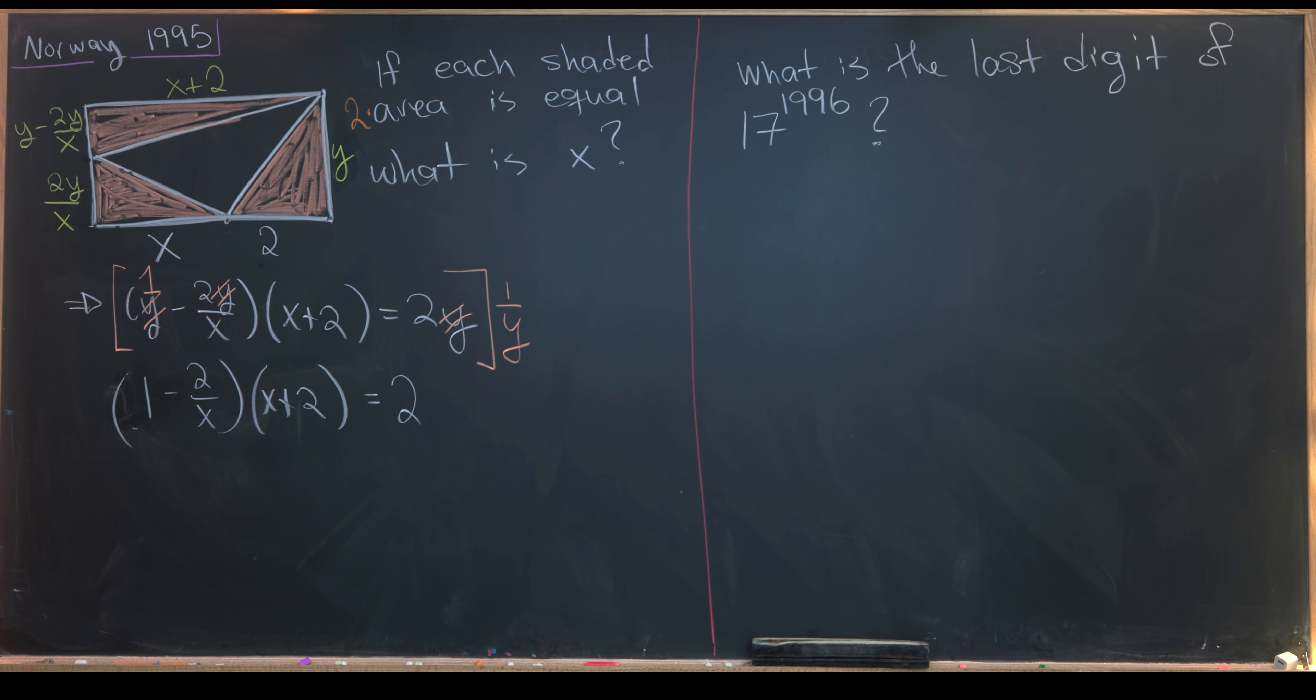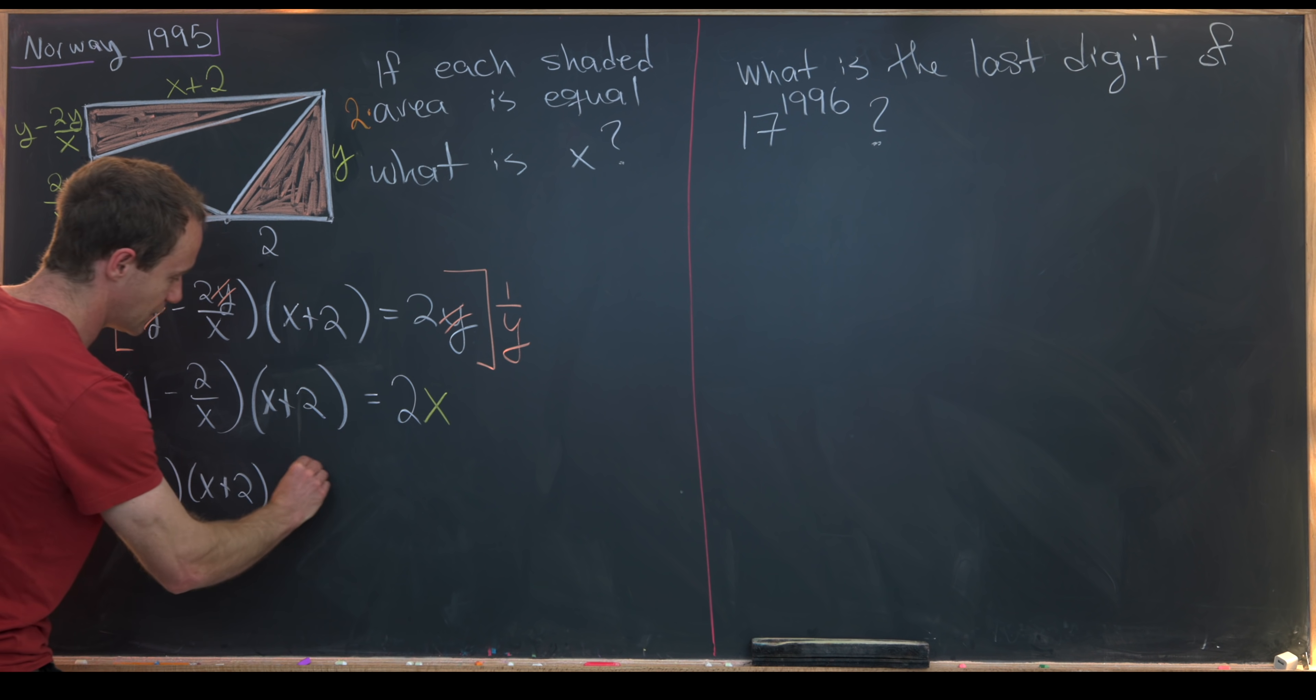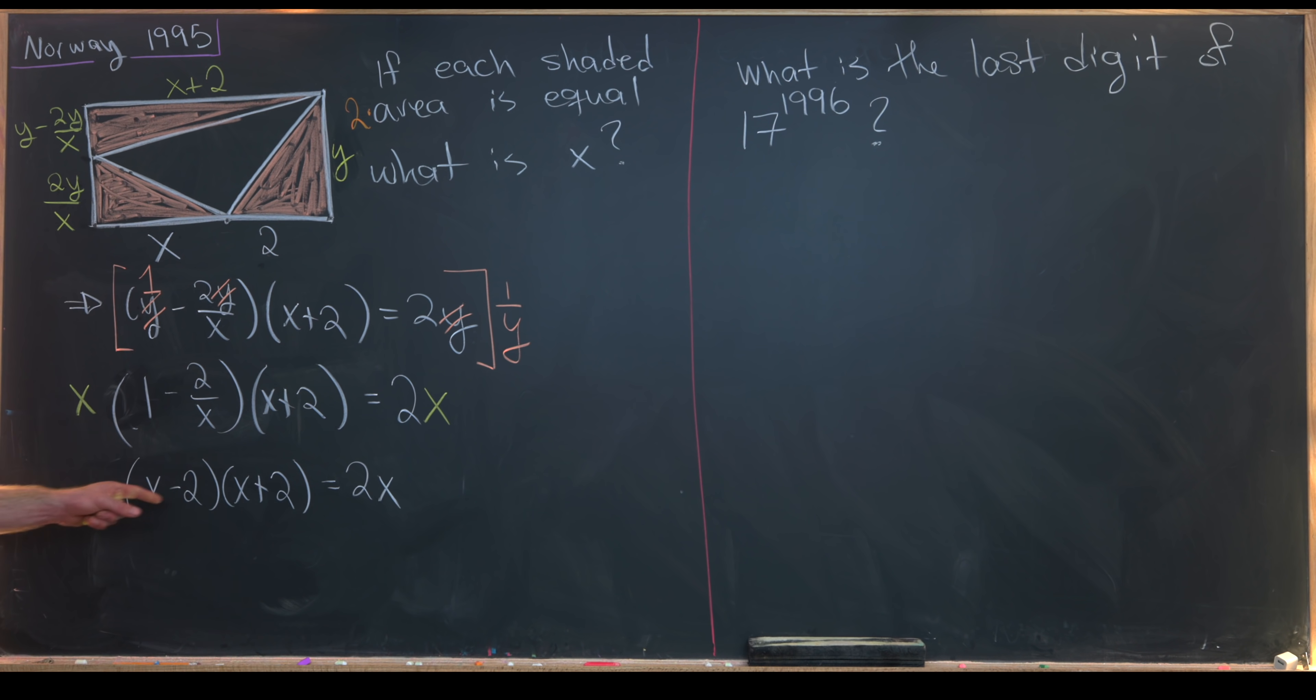So maybe just to make this look a little nicer, I'll multiply both sides of this equation by x. And now we have x minus 2 times (x plus 2) equals 2x. Multiplying out the left-hand side and moving this 2x over leaves us with x squared minus 2x minus 4 equals 0.